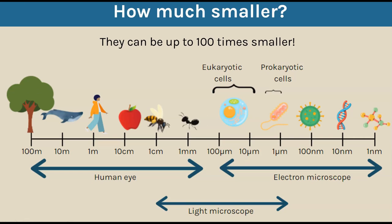Bacteria cells or prokaryotic cells are much much smaller. The eukaryotic cell can range between 10 to 100 micrometers - for example, a human egg cell is a much larger cell. Prokaryotic cells are around one micrometer, so they can be around a hundred times smaller in size - that is a big difference.